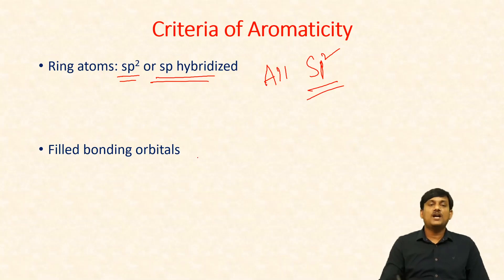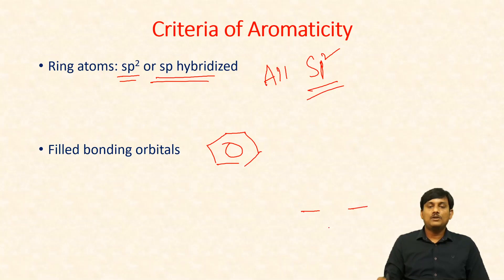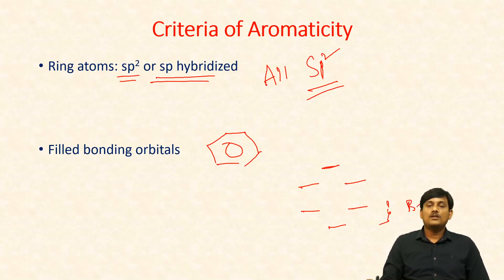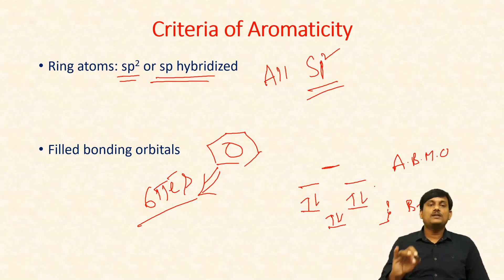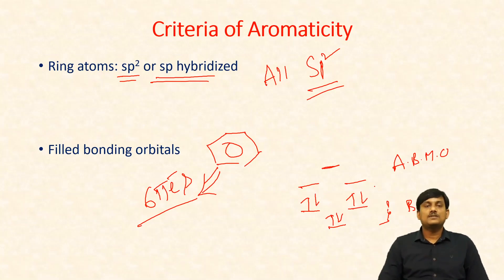The next criteria concerns filled bonding orbitals. For benzene, with six molecular orbitals at various energy levels, the six pi electrons will be filled completely in the bonding molecular orbitals. The bonding molecular orbitals should be completely filled with electrons. This is a criteria for aromaticity. Using these criteria, you can easily distinguish which compounds are aromatic and which are non-aromatic.